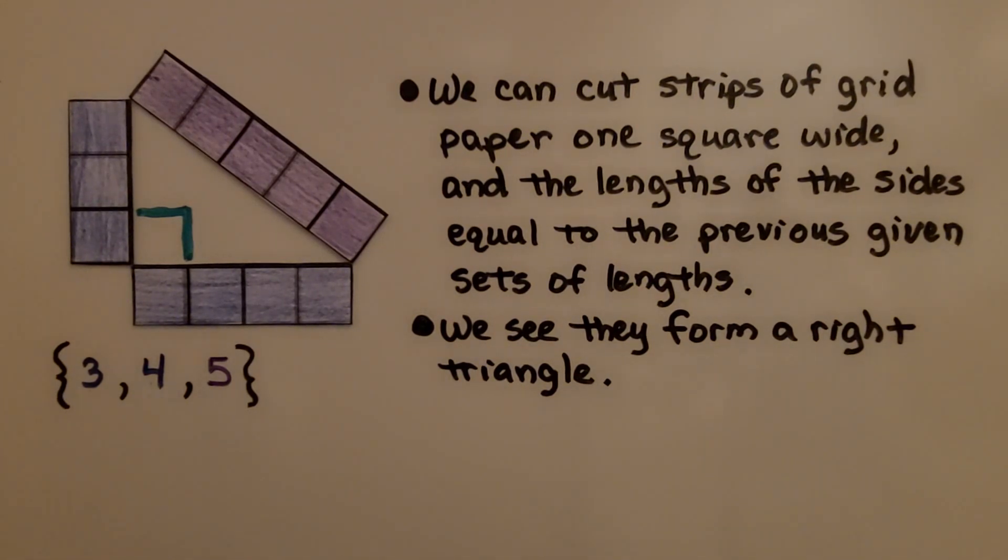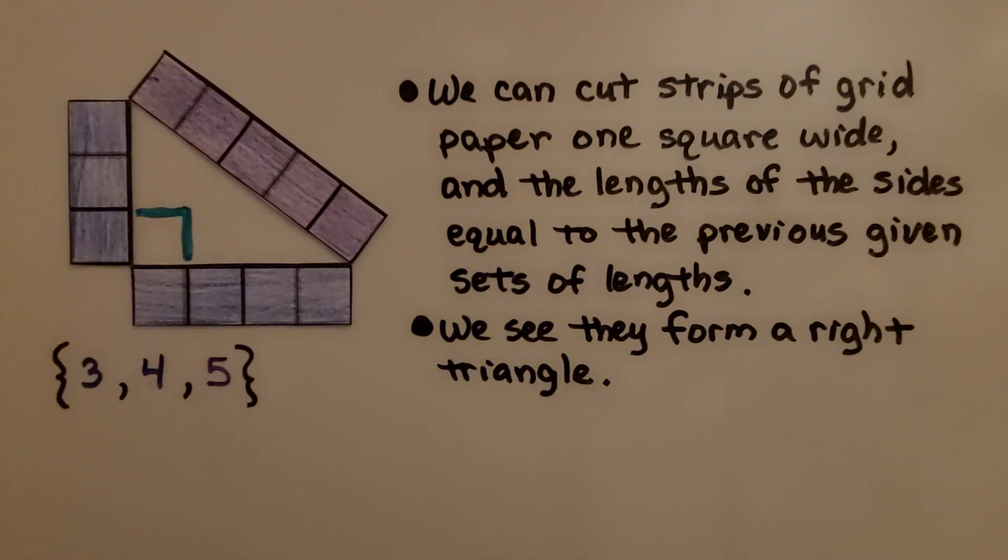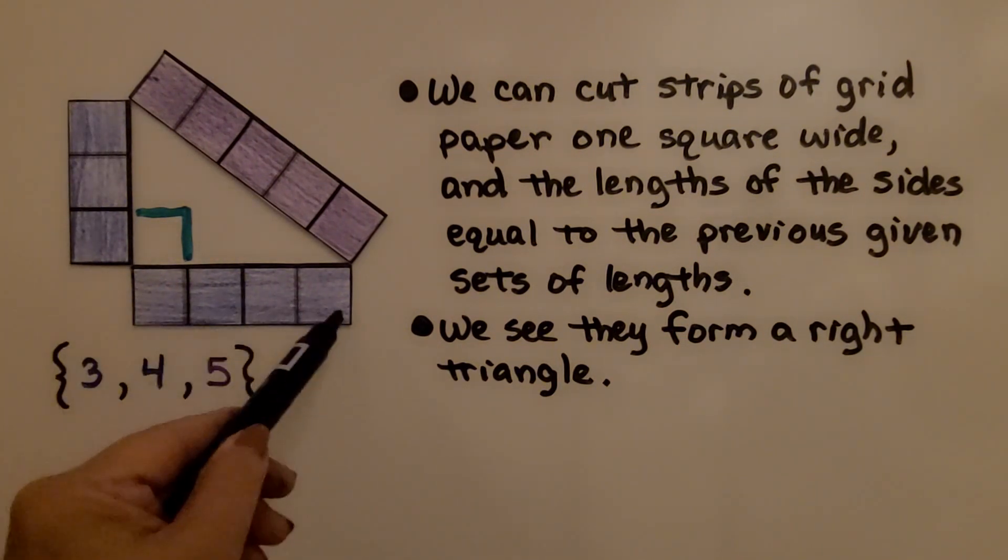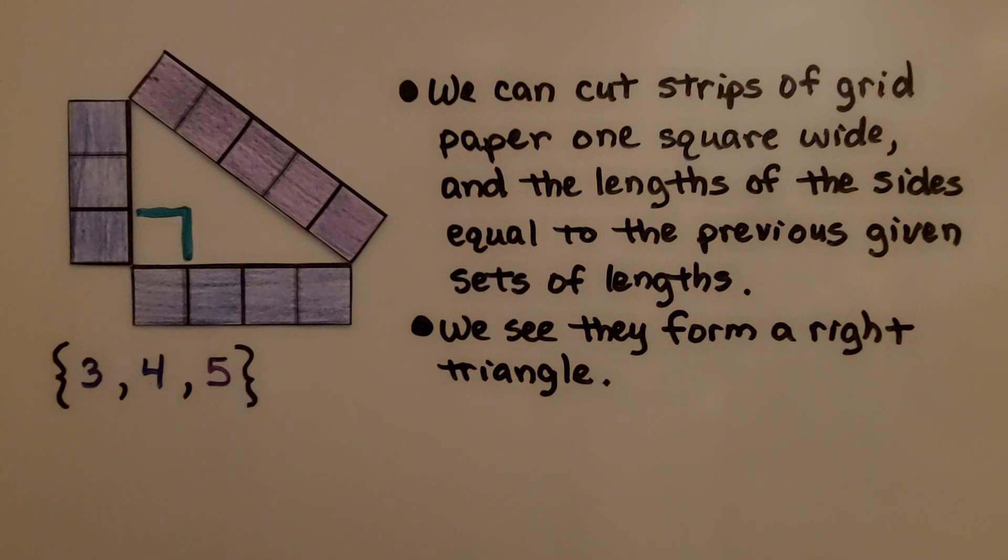We can cut strips of grid paper one square wide and the lengths of the sides equal to the previous given sets of lengths. We have 3, 4, 5. We cut one that's 3 units, another that's 4 units, and another that's 5 units. And we see they form a right triangle in the center here.